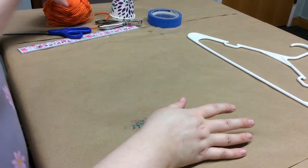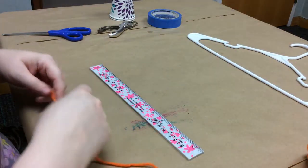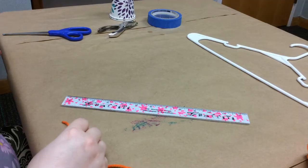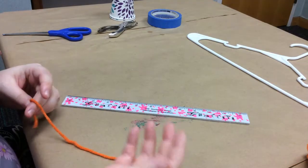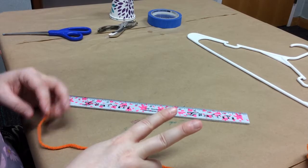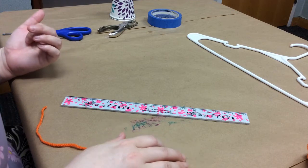So to start out with you are going to take your ruler and your yarn, you're gonna measure 12 inches twice, so 24 inches of yarn, and you're gonna do it twice. So you need two pieces that are two feet long. So two pieces that are 24 inches.